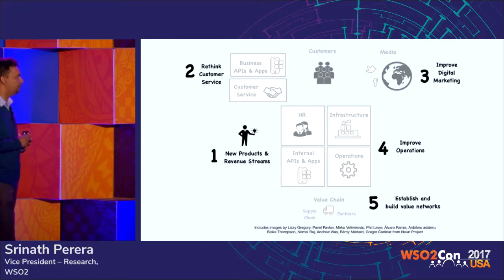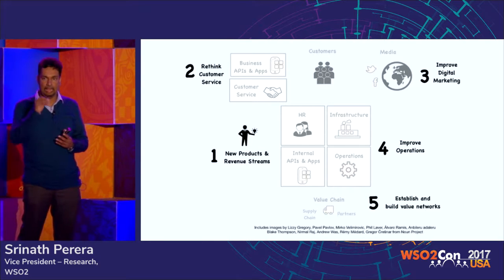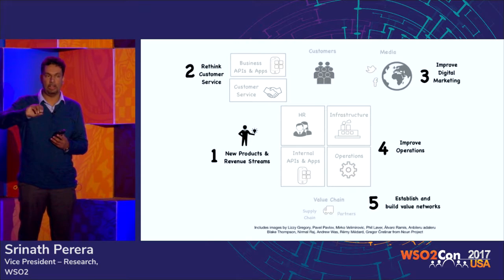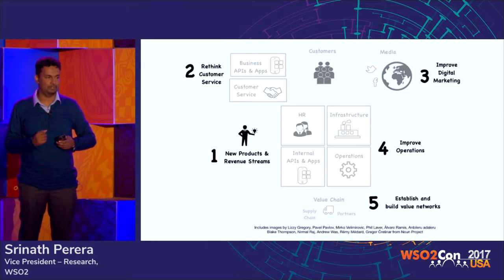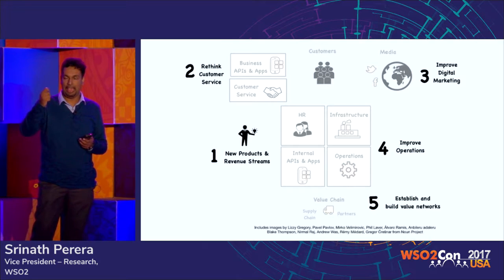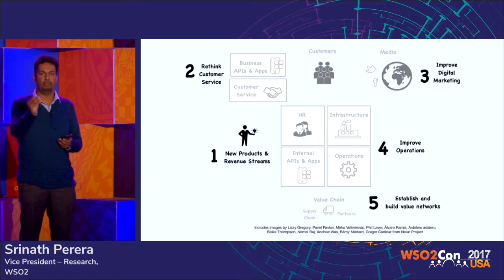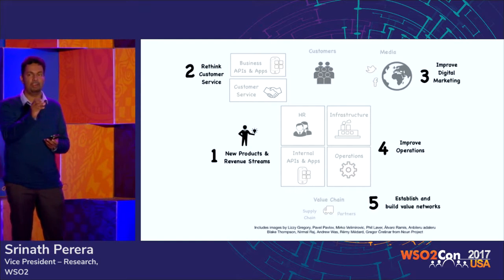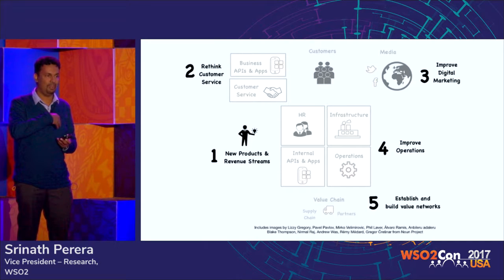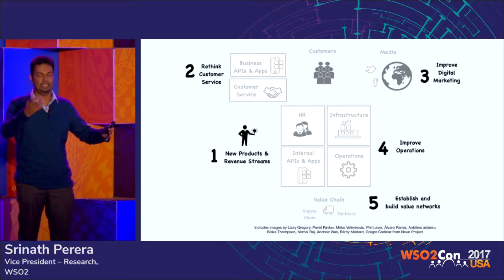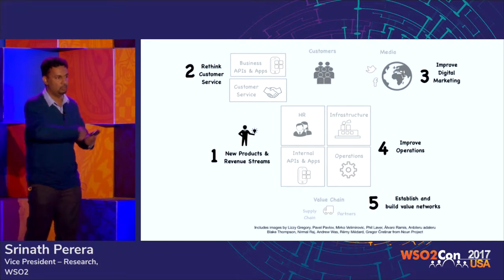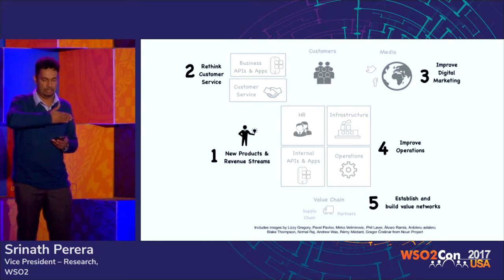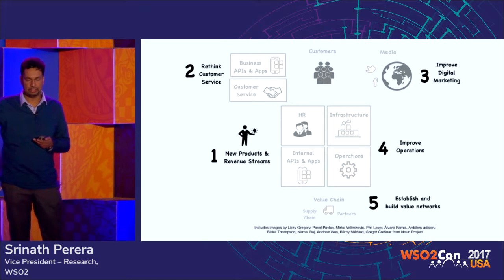One very famous example is Walmart. They give very detailed analytics down their value chain for their partners. For example, if you are a shampoo company, Walmart would give you a lot of analytics on how your products are being sold, how long they're on the shelf, and so forth. That becomes a major competitive advantage for Walmart when manufacturers compare supplying to Walmart versus somebody else. They let the suppliers and manufacturers innovate.